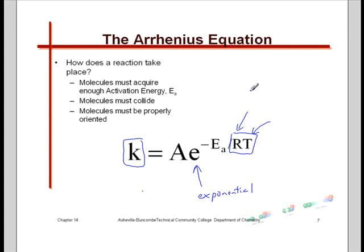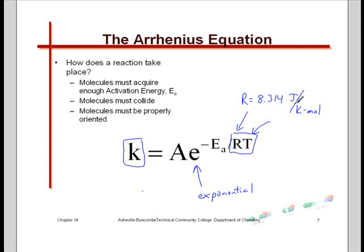That value for R comes from chapter 10, where there's a table showing variations of the gas constant as units change. For this chapter and the next two chapters, we'll be using 8.314 joules per kelvin mole. Units are important — they need to cancel out properly in a calculation, which is a helpful way to check whether your calculation is working.